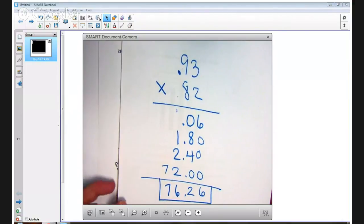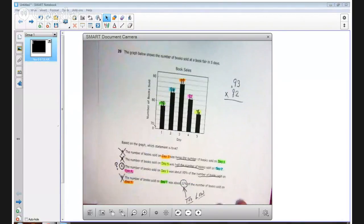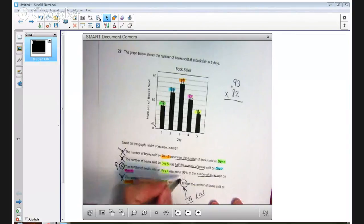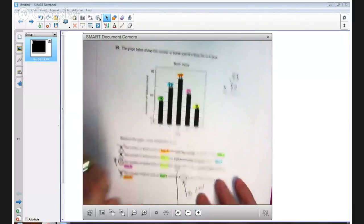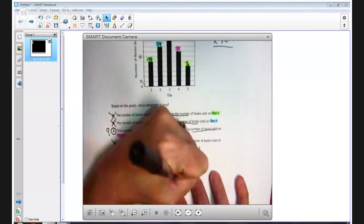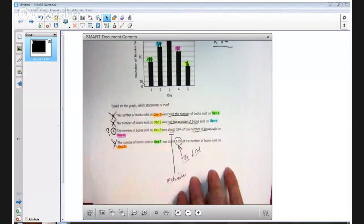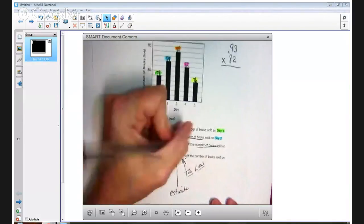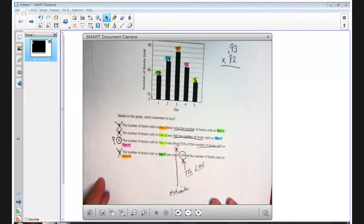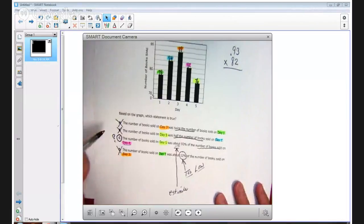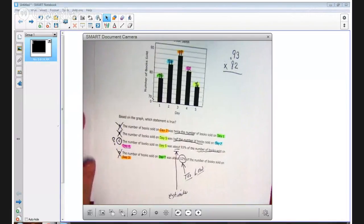And you'll notice here, with this problem, that we want about, about means it's an estimation. So we're going to estimate. And since we did get an answer, seventy-six point two six, about ninety-three percent is correct. The answer choice C was the right answer to this problem.